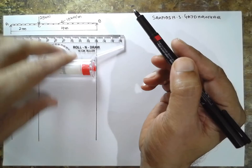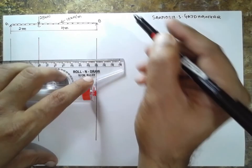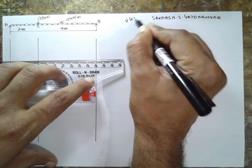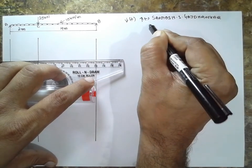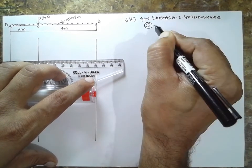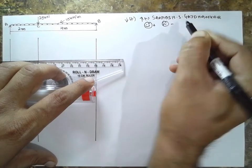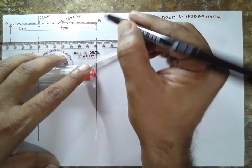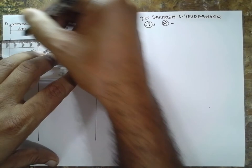First I will convert the UDL. The bottom arrow is positive, upward arrow will be negative, sagging will be positive, hogging will be negative. First I will convert into point load.